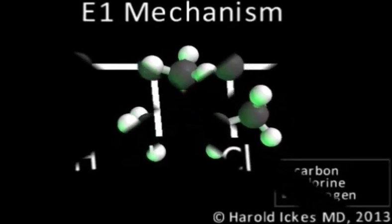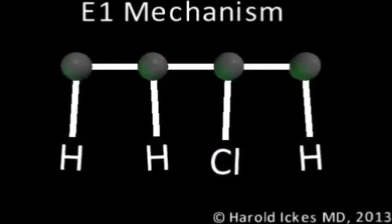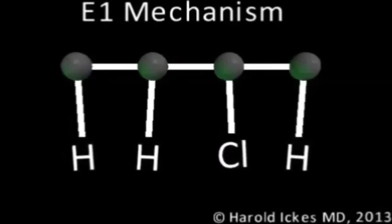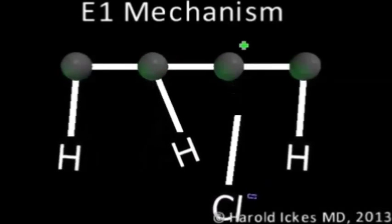That's E1 in a nutshell, but let's break this down and start with a simpler example, such as this unrealistic cartoonish molecule. First, the chlorine departs, leaving a positive charge on the carbon.